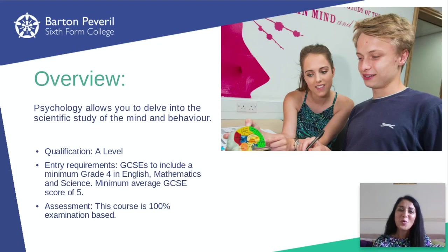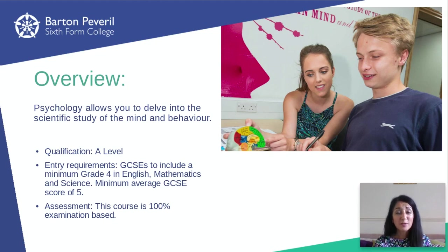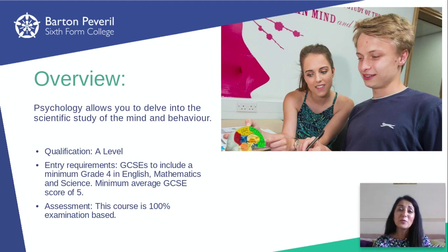So what qualifications do you need to do the psychology A level? It is a two-year course so you will have end exams — three exams that you'll sit at the end of the two years. There is no coursework in psychology, so it's completely exam based. In order to get on the course we do require a grade four in maths. That's important because psychology is a science and all sciences require a 10% maths content, which we do have. With a grade four in maths you will be very adept at coping with the maths you'll find in psychology.